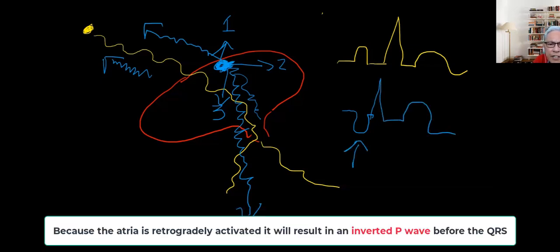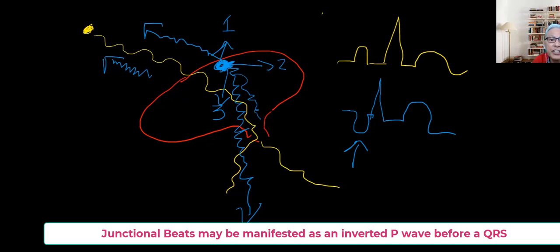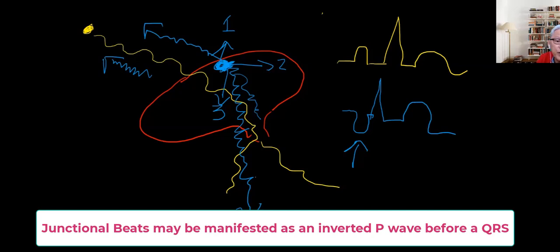Notice that there is an inverted P wave. This is one of the characteristics of a beat that comes from the AV node: an inverted P wave before the QRS complex. So that's the first characteristic, an inverted P wave before the QRS complex.